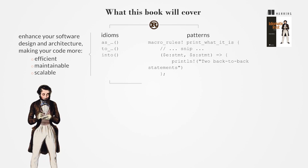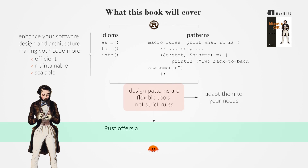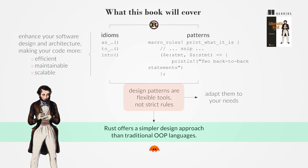The book emphasizes that design patterns are flexible tools, not strict rules, and encourages readers to adapt them to their needs. Rust's approach to software design is presented as more straightforward and effective than traditional OOP languages like C++ and Java.